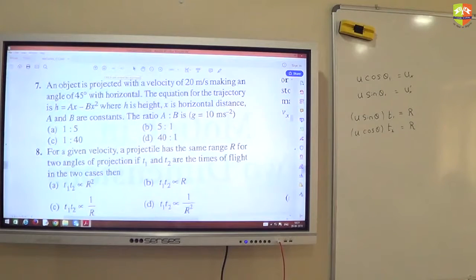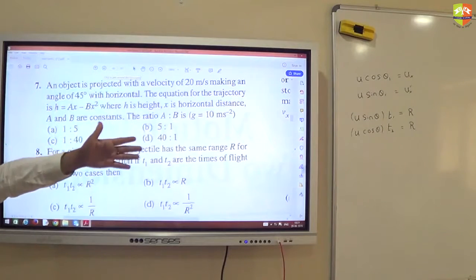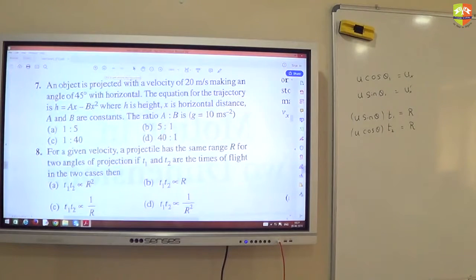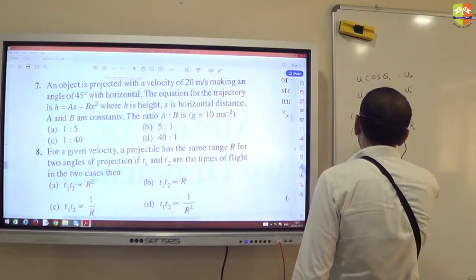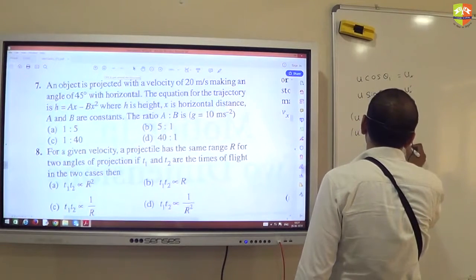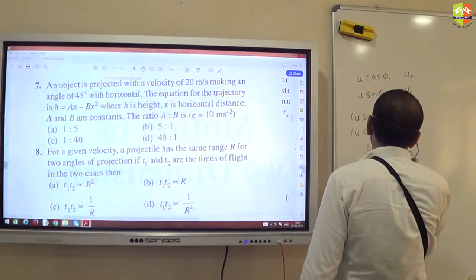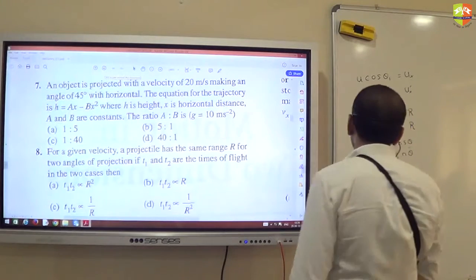So usinθ1 × T1 is R, and ucosθ1 × T2 is also equal to R. Velocity along x-axis into time of flight is the range. Then you take the ratio. You know the range formula also, right? So T1/T2 is basically cosθ/sinθ, and you write down the formula for T1 and T2.